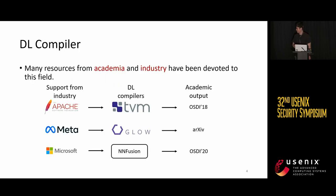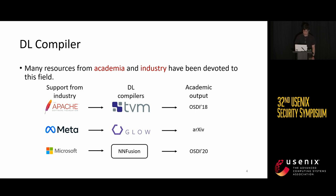Until now, many resources from academia and industry have been devoted to the research of deep learning compiler techniques. For example, TVM, which is probably the most mature deep learning compiler, is supported by Apache Software Foundation and was originally published at OSDI '18. Glow is supported by Meta, and NNFusion, which was published at OSDI '20, is supported by Microsoft.